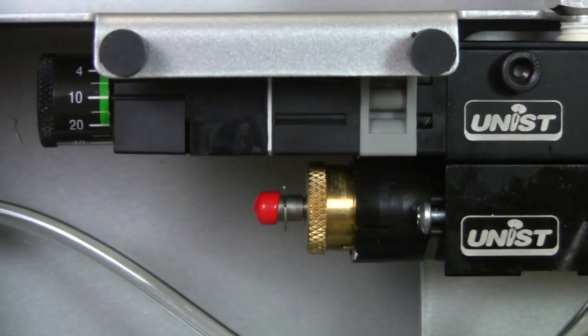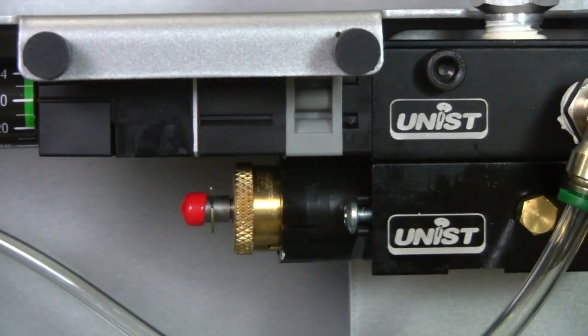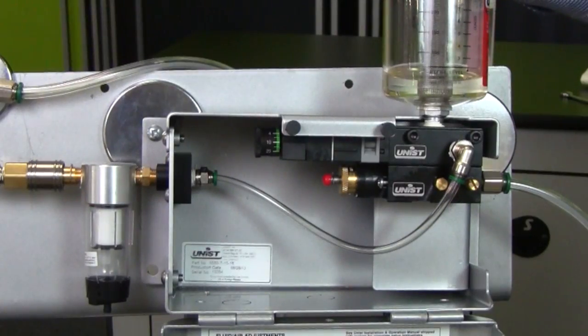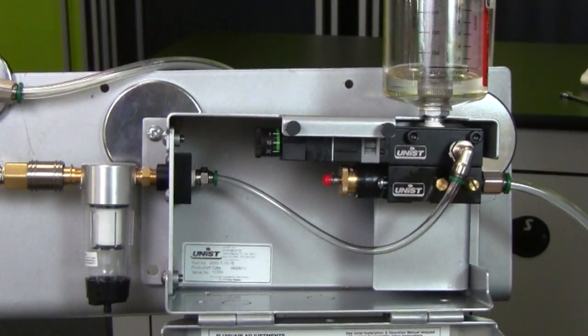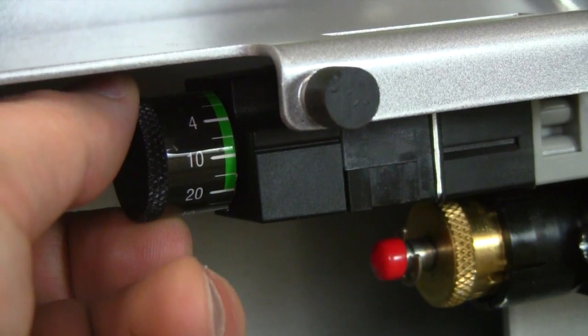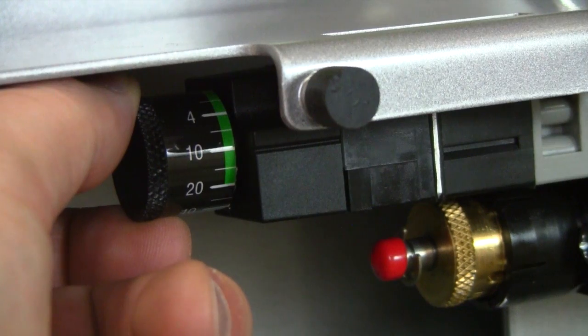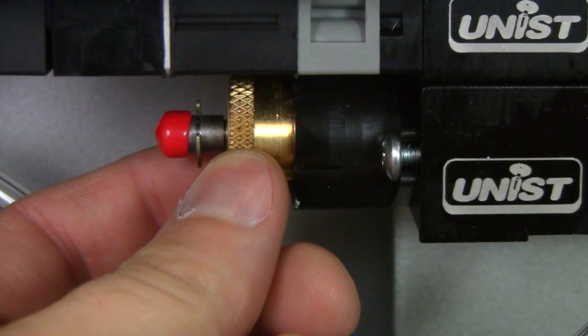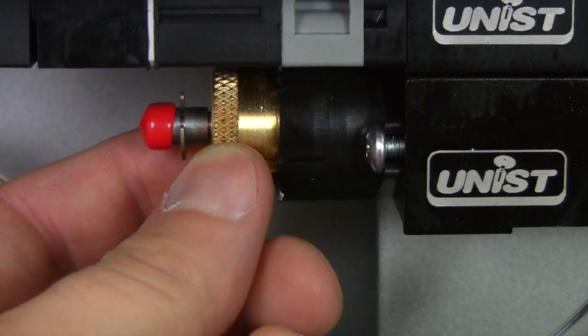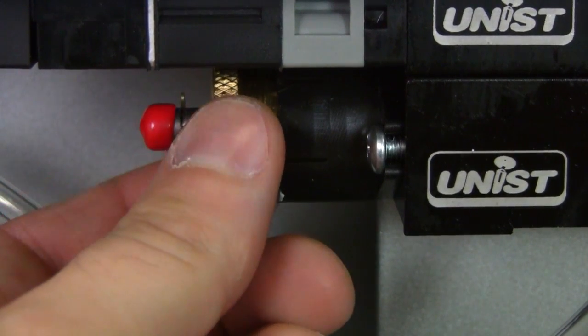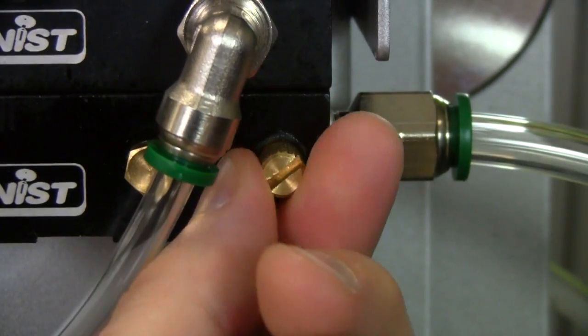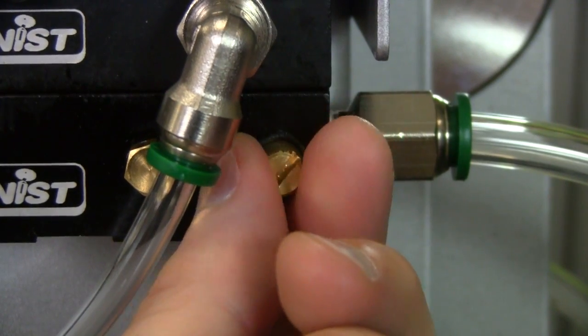Now before we turn the air on to the system, let's review our system adjustments so that you can achieve the desired output and the desired spray pattern. There's three adjustments on a Cool Lubricator. There is the adjustment knob here for the frequency of pumping. There is the length of the stroke of the pump, which is changed with this knob here. And over here we have the air metering screw. This is what controls the flow of air out of the nozzle.